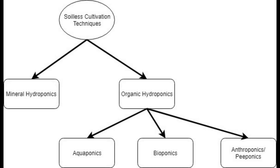So when you want to grow plants in a mineral hydroponic system, the source of the nutrients comes from minerals that are mined from the earth, transported, refined, and mixed into solution before being added.